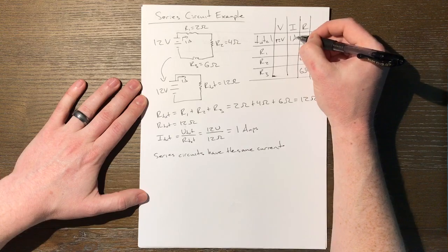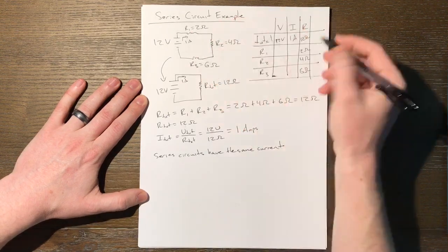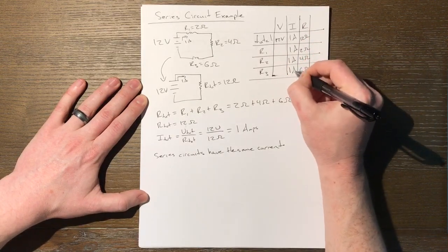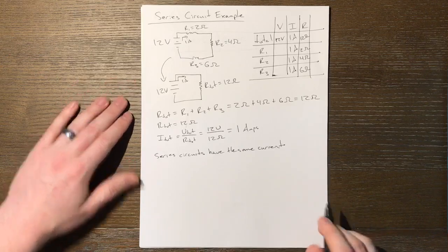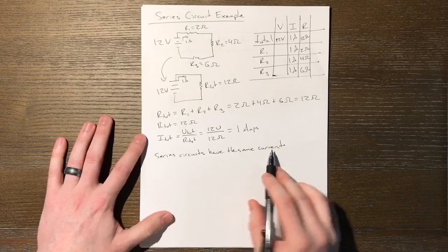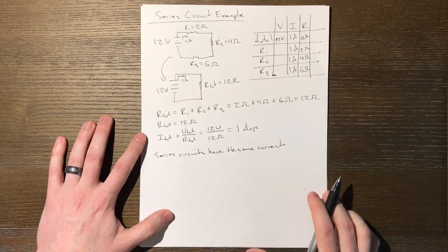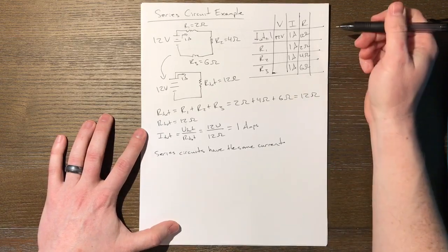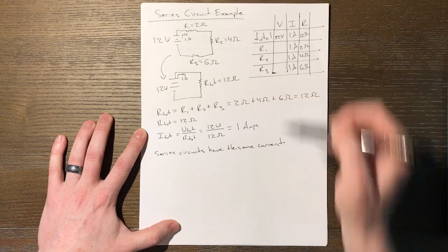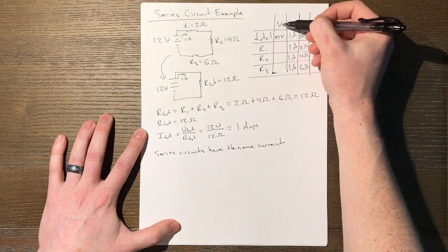So we know that I total is one amp. That comes out, and it hits R1, R2, and R3. So we can just drop that down this entire column. One amp, one amp, one amp. The amount of current is the same for each component in series. That is just a rule that we know, and we are able to populate that entire column in one fell swoop. And what are we left with? We actually can see now that we only have one thing to find out in each of these rows, which means we can solve for it. It's our voltage. We can now come up with the voltage drop from each individual resistor.